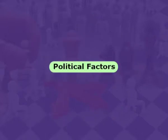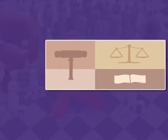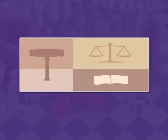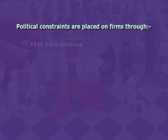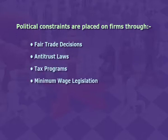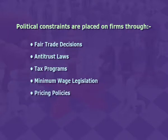Political factors define the legal and regulatory parameters within which firms must operate. Political constraints are placed on firms through fair trade decisions, antitrust laws, tax programs, minimum wage legislation, pricing policies, and many other actions aimed at protecting employees, customers, the general public, and the environment.